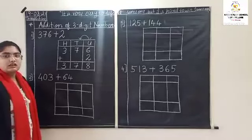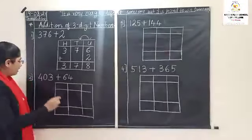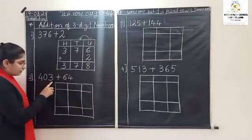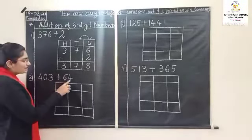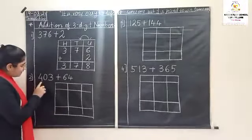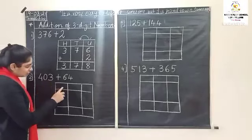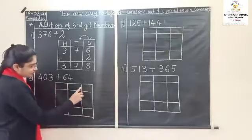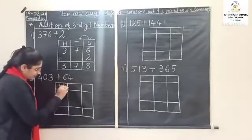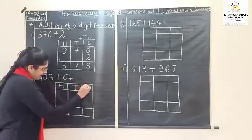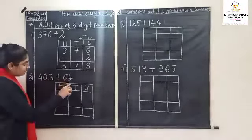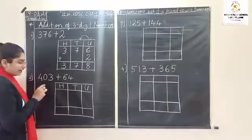Now we will see the next question. Read the number with me: four hundred and three plus sixty-four. See, how many digits are there? One, two and three. So a three-digit table is already drawn. See how to write: hundreds, tens and units. First, arrange this number in this table.